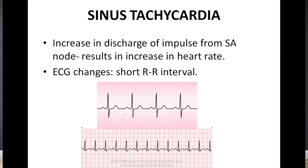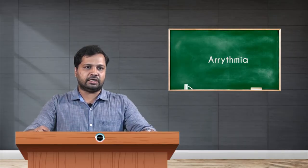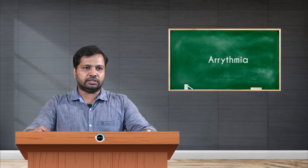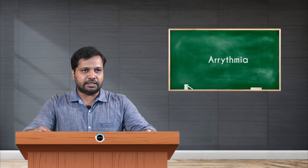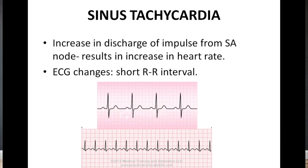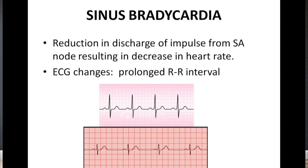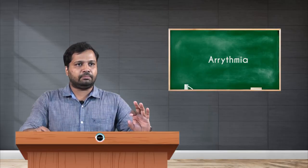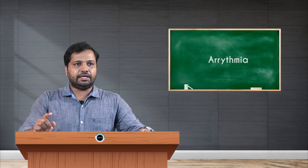The second classification of normotypic arrhythmia is sinus tachycardia. There will be an increase in the discharge of impulses from the SA node, due to which there is an increase in the heart rate. In the ECG, comparing a normal ECG with the sinus tachycardia ECG, a very short RR interval is seen in sinus tachycardia, indicating the increased heart rate.